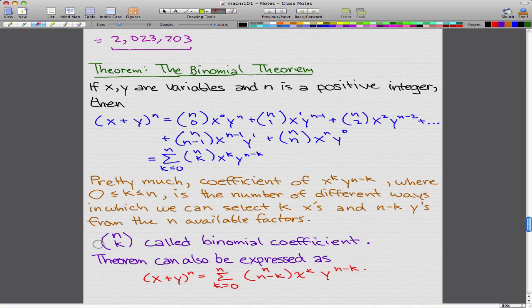I have done this already, but I'm going to go through the binomial theorem. You may have learned this in high school. So here's the binomial theorem: if x and y are variables, and n is a positive integer, then we have this equation.